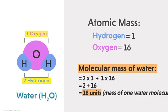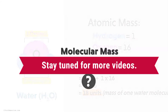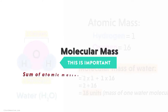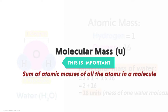Like this we can calculate the molecular mass of any molecule. The definition is: the sum of atomic masses of all atoms in a molecule is called molecular mass. We can express it in amu or simply u. Let's look at more examples.